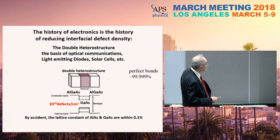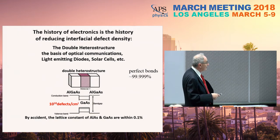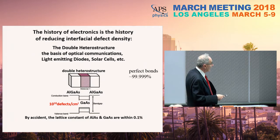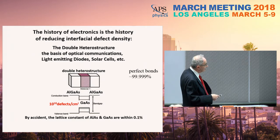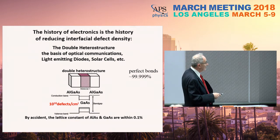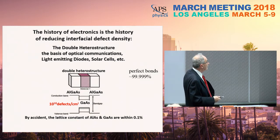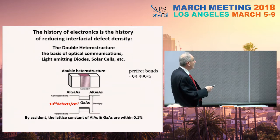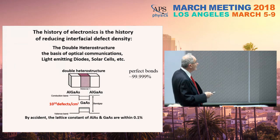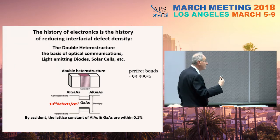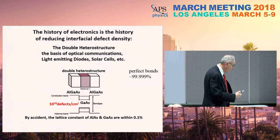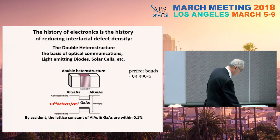The idea of making a sandwich between a wider bandgap and a narrower bandgap solves the problem, because the electrons stay in their potential well and the holes stay in their potential well — they never see the external surfaces. This technology ended up being the basis of optical communication, light-emitting diodes, and solar cells, just as making a very good interface on silicon was the basis of our whole computer industry.